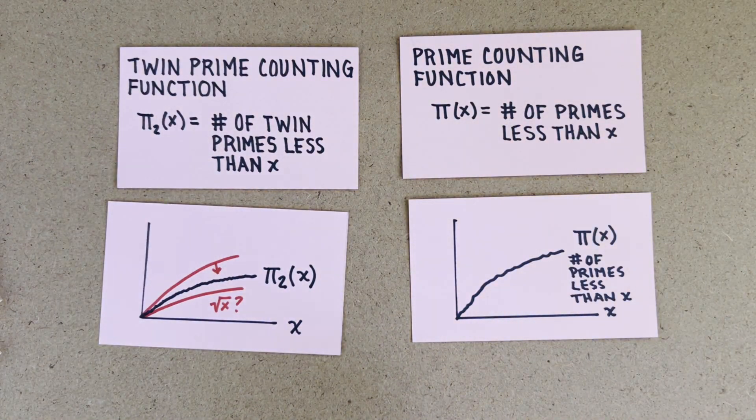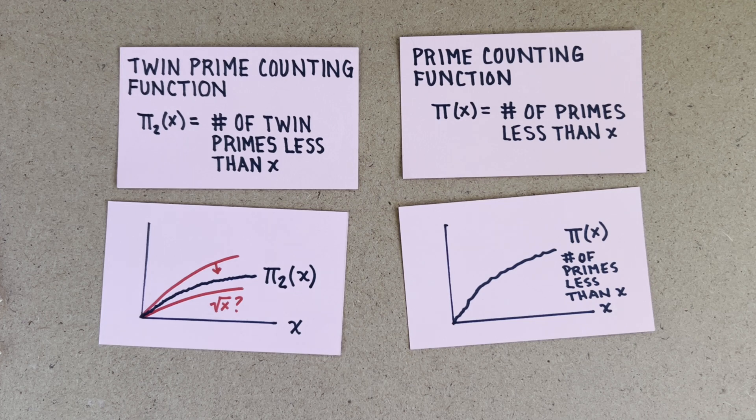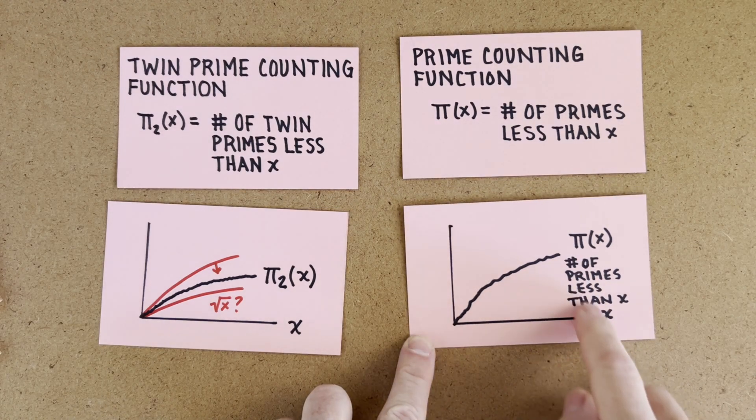Here's an empirical plot of the number of primes between 1 and x. It also tapers off. From here to here, half the numbers are prime. From here to here, a third of them are. And from here to here, a fourth of them are.